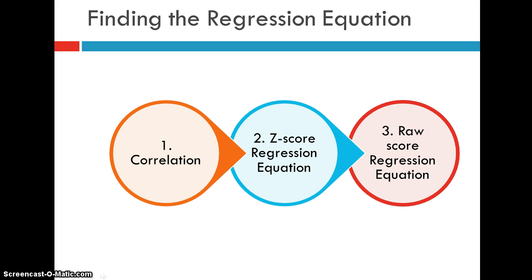Okay, so how do we get this regression equation? Well, first we get the correlation. Then we get a z-score regression equation, or a standardized regression equation. And then we get a raw-score regression equation, or an unstandardized regression equation. So we're going to start with some data with step one.